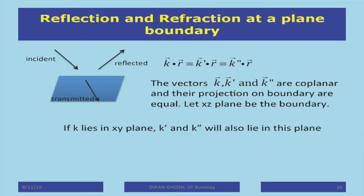This condition tells us that the vectors k, k', and k'' are coplanar, and their projections onto the boundary must be equal.